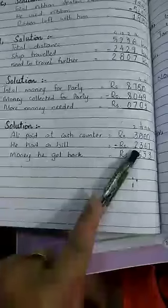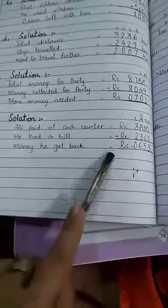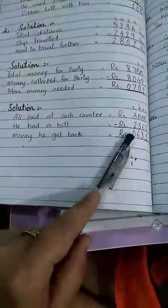Students, we always minus the smaller value from the larger value. Ali paid at the cash counter: how much money did he pay? $3,000. And how much was the bill? That was $2,367. You have to subtract. Make sure that you will do it in a good way.